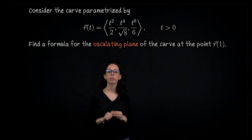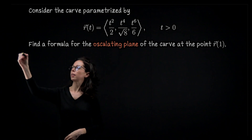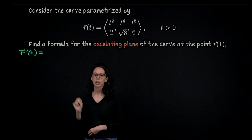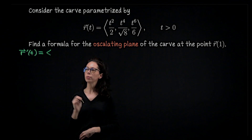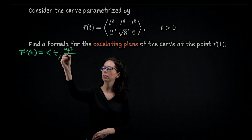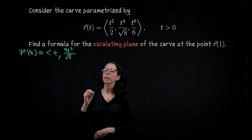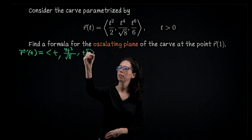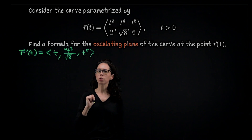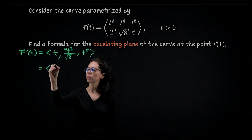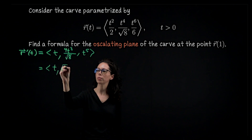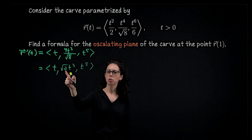Let's start by writing down our velocity vector r'(t), taking the derivative term by term. That's going to be t for the first component, then 4t³/√8 for the second — and since √8 = 2√2, that simplifies to √2·t³ — and then 6t⁵/6, which is t⁵ for the third component.